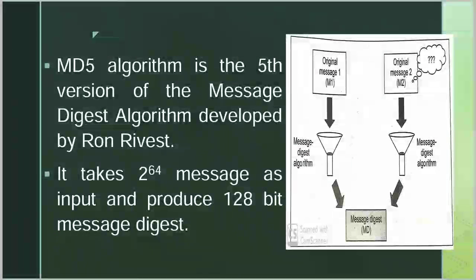MD5 Message Digest Version 5 Algorithm is developed by Ron Rivest. MD5 Algorithm has many other versions: MD1, MD2, MD3, MD4. But MD5 Algorithm is quite fast compared to other versions, so here we are discussing only MD5 Algorithm. MD5 Algorithm takes 2^64 bit plaintext message as input and produces 128-bit message digest as output. This message digest is also called a Hash Code or Hash Value, because this Message Digest Algorithm is based on Hash Function.